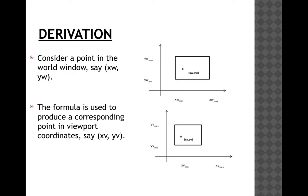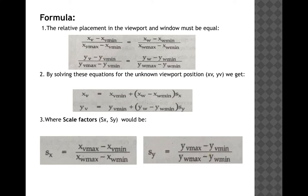The derivation to convert the world coordinate system to the normalized coordinate system is given here. In the world coordinate system, the window area ranges from xw_min to xw_max and yw_min to yw_max, with a point (xw, yw) inside the window. Our goal is to represent this window in the viewport of normalized coordinates, where that point (xw, yw) maps to (xv, yv). Since the relative placement in the viewport and window must be equal, the equation is: (xv - xv_min) / (xv_max - xv_min) = (xw - xw_min) / (xw_max - xw_min).